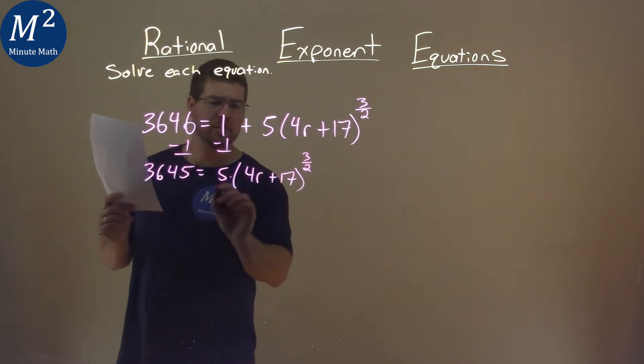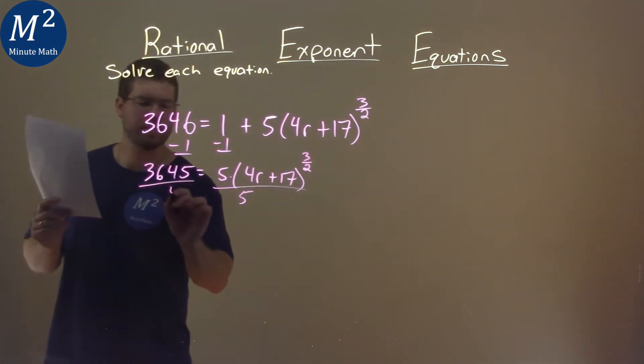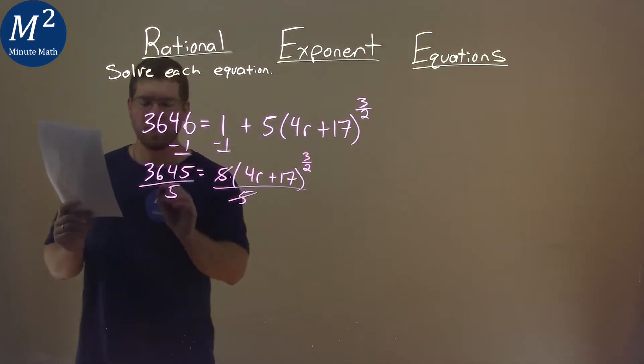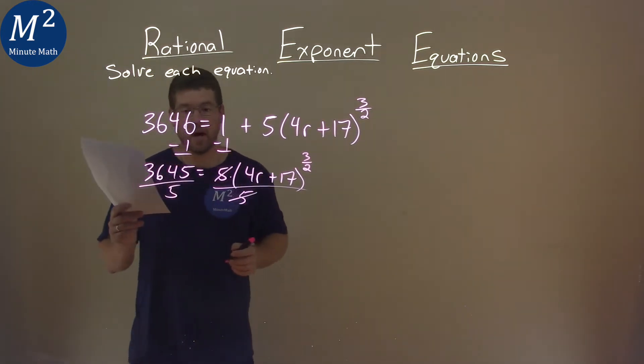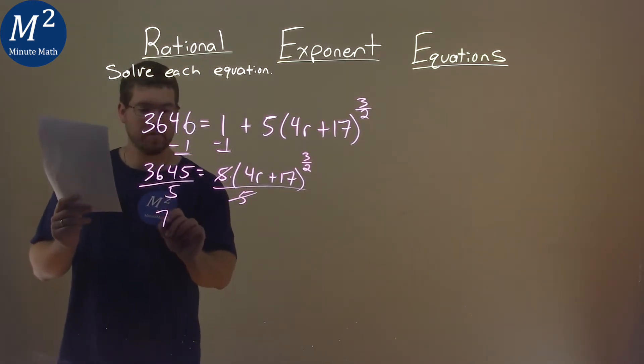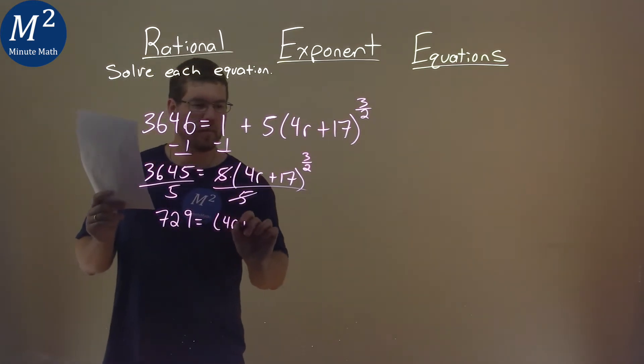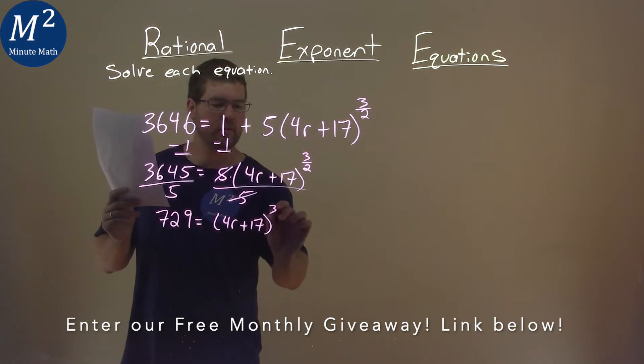We're multiplying by 5 here, so let's divide by 5. Let's get rid of that. Cancels out, and 3,645 divided by 5 is 729. And we're left with 4r plus 17, all to the 3 halves power.